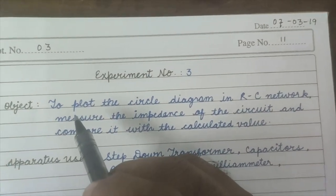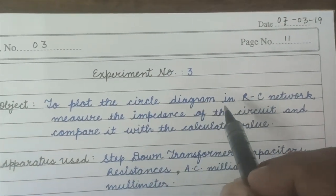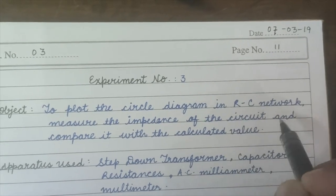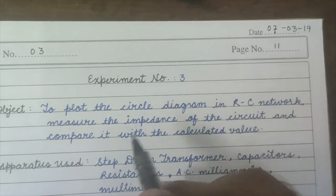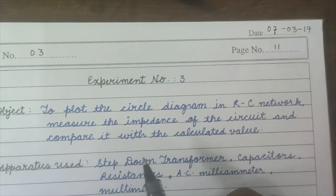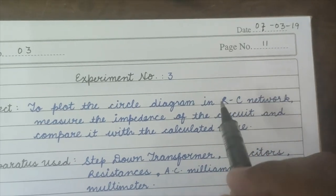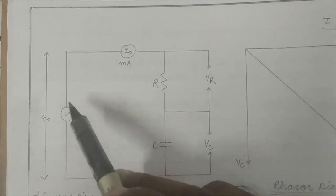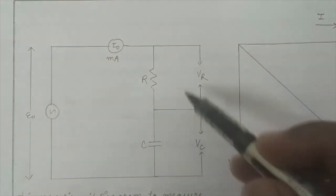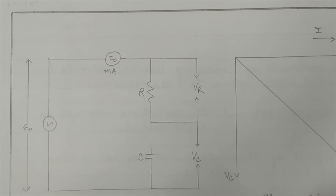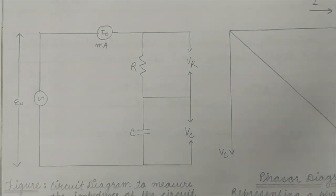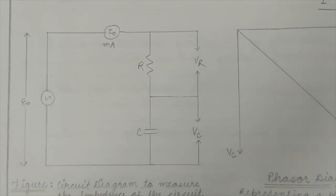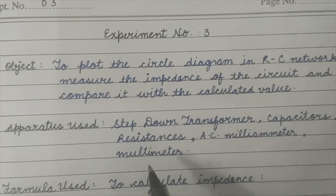Today we will perform the experiment to plot the circle diagram in an RC network and to measure the impedance of the circuit. We will compare the measured impedance with the calculated values. The apparatus we need includes a step down transformer, capacitors, resistance, an AC milliammeter, and a multimeter.